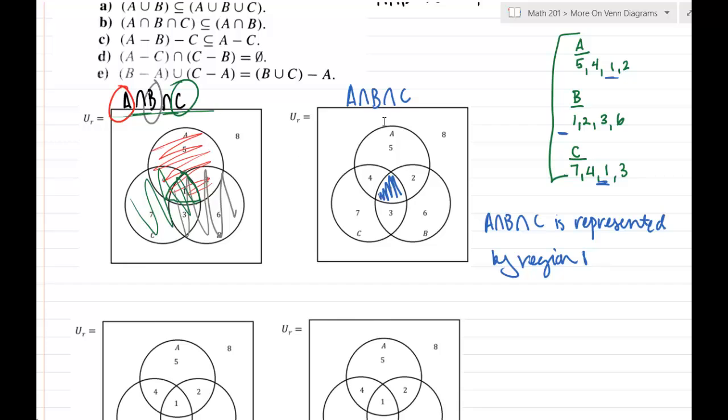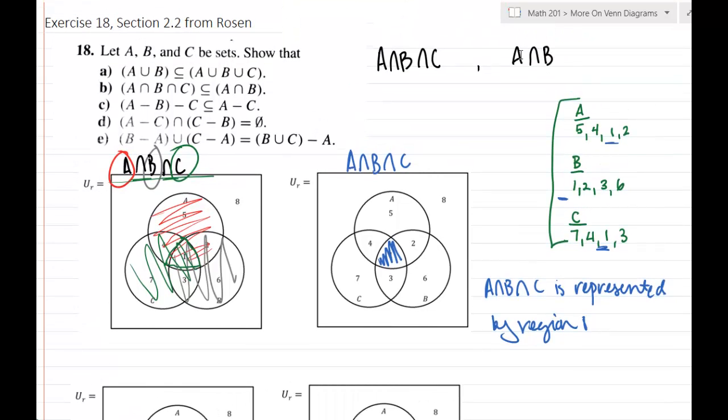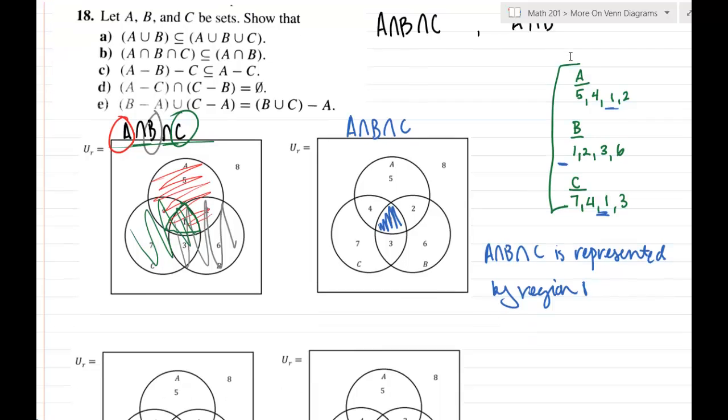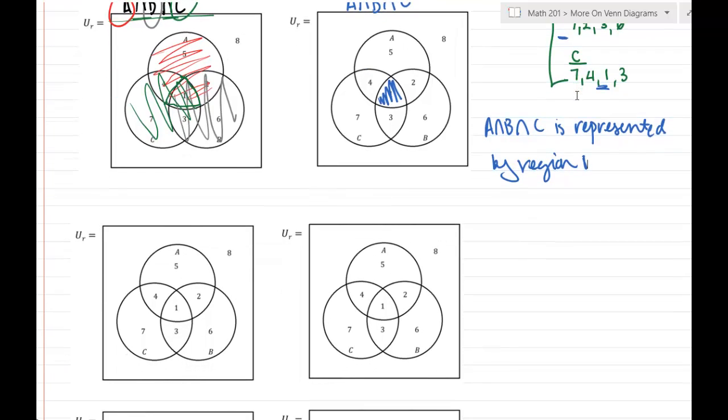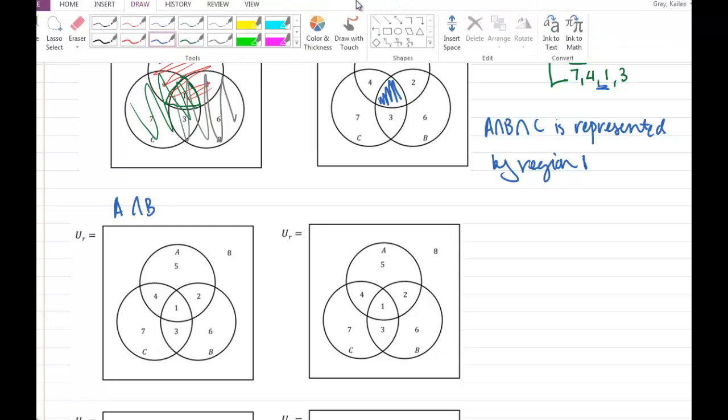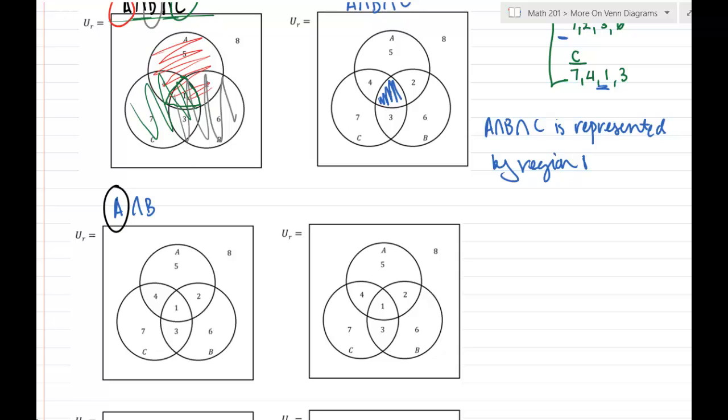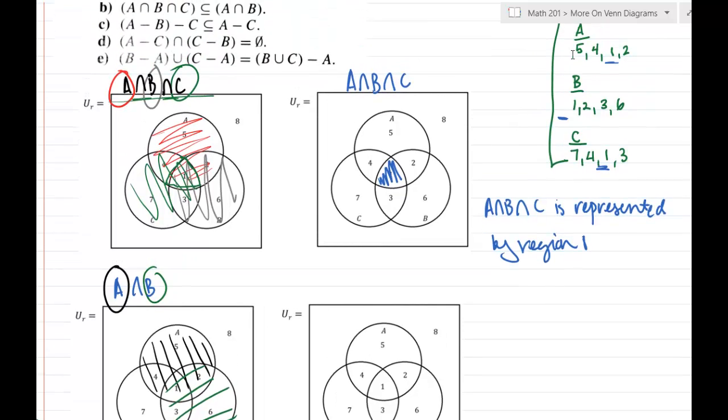Now let's think about the other side, the other Venn diagram we're going to draw. We're going to draw a Venn diagram for A intersect B. We're trying to talk about A intersect B. Just like in my last example, I'm going to shade A and B in two different colors. I'm going to shade A. I got region one, two, four, and five. I'm going to shade region B. I'll get regions one, two, three, and six.